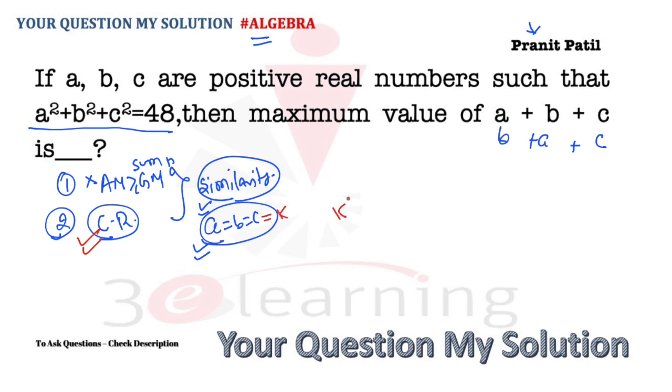So say a equal to b equal to c, let's assume as k. So we can say this one is nothing but k² + k² + k² is nothing but 48, so k² is equal to 16 and k is equal to 4 because we have positive, we won't take minus 4. And since these are k, k, k, we can say the answer required is 3k, so the value is nothing but 12.